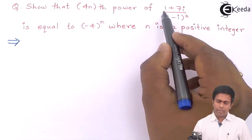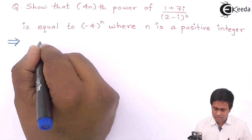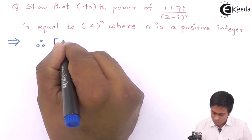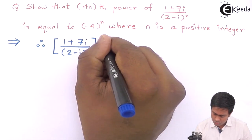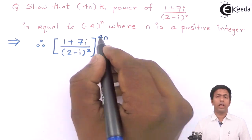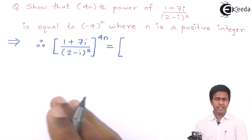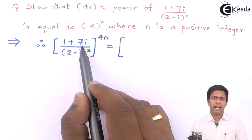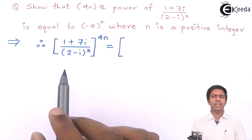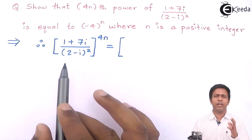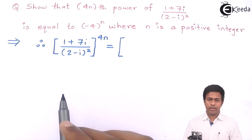We want to prove that [(1 + 7i) / (2 - i)]² raised to 4n equals minus 4 raised to n. To convert the expression to standard form, we need to eliminate the imaginary part from the denominator. Let's focus on the denominator first.